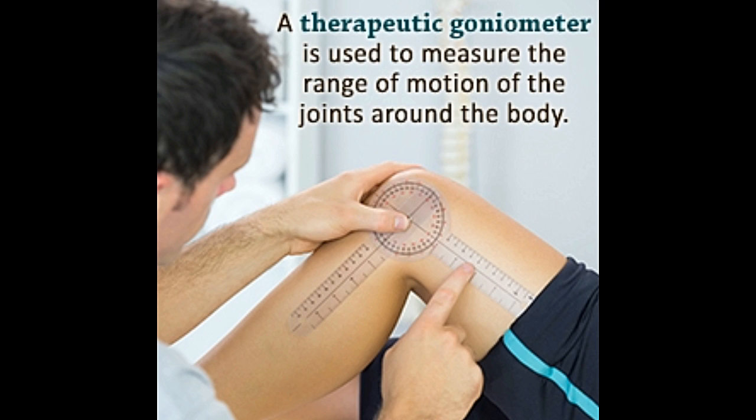Gemma Frisius, a Dutch physician, mathematician, cartographer, philosopher, and instrument maker, first described the goniometer around 1538.